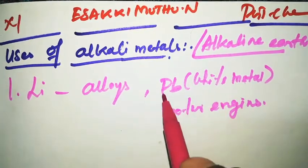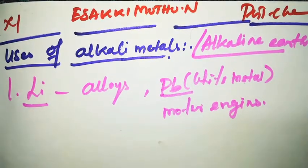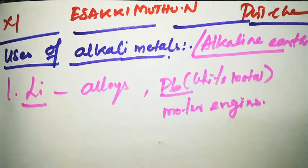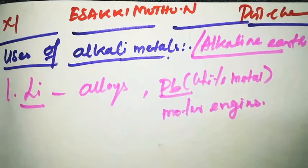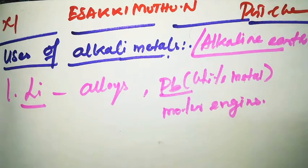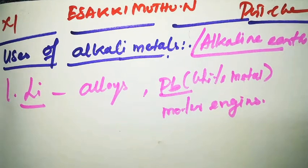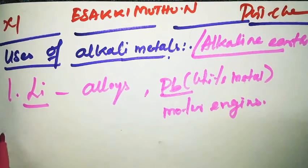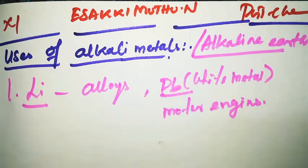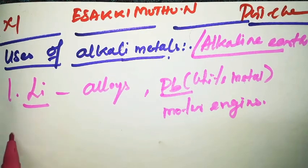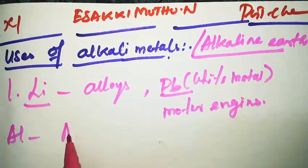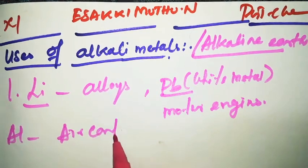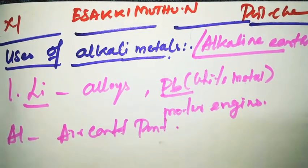Next is aluminum. Aluminum is used in aircraft. The major component for the preparation of aircraft has a special name called duralumin. Aluminum is used for the manufacturing of aircraft parts using duralumin.